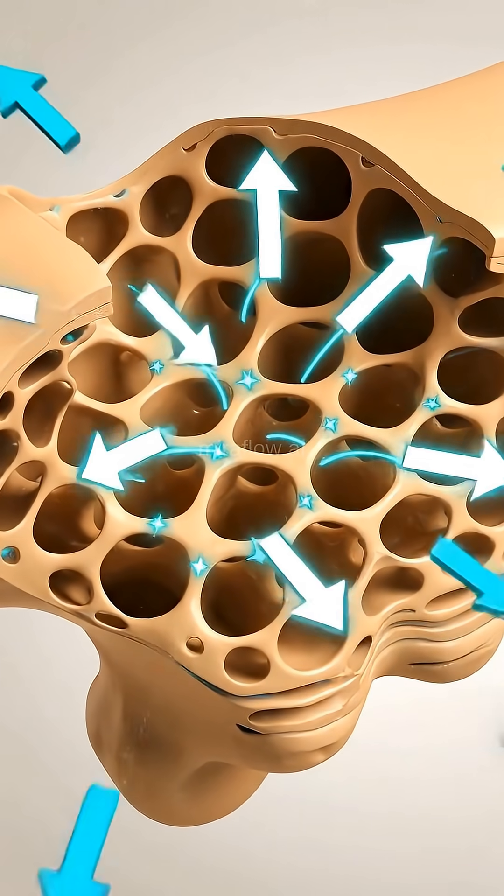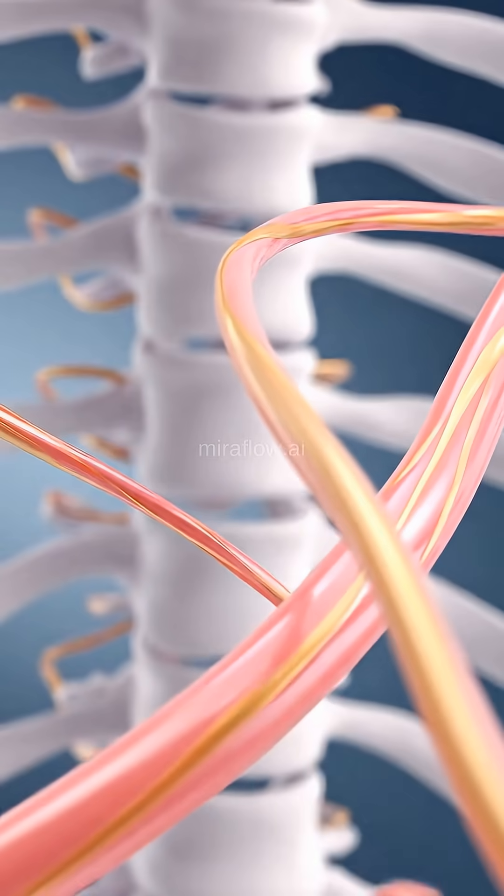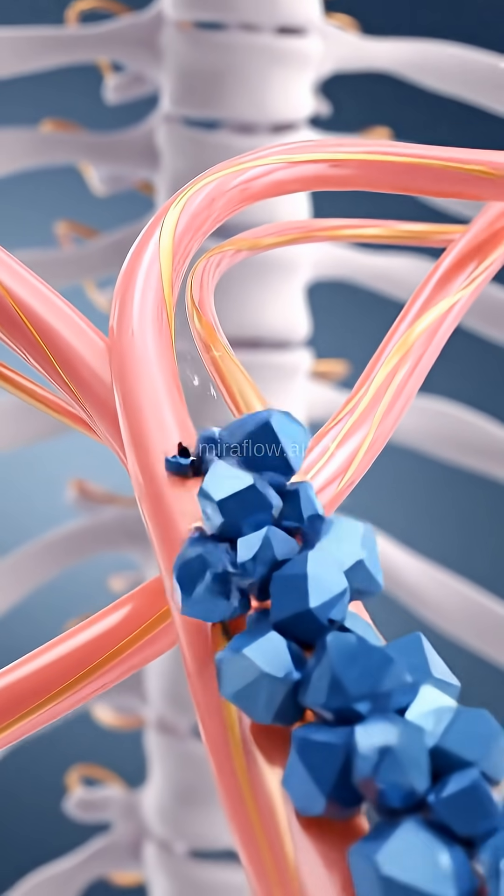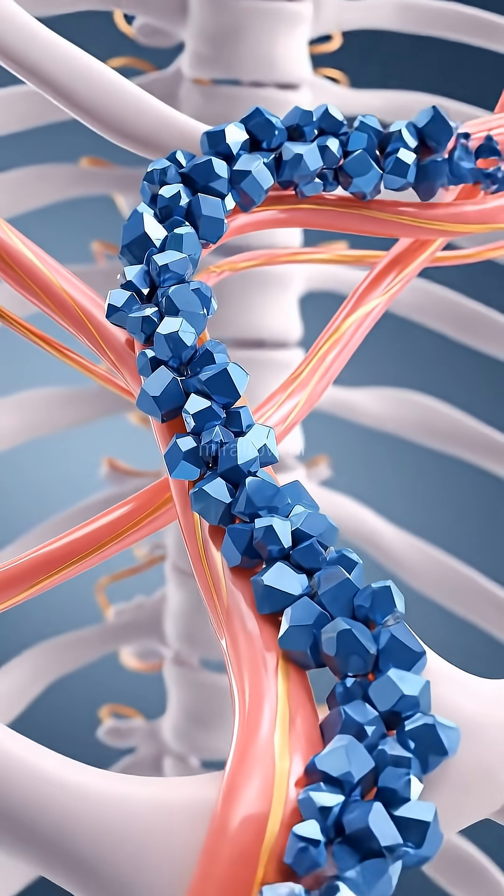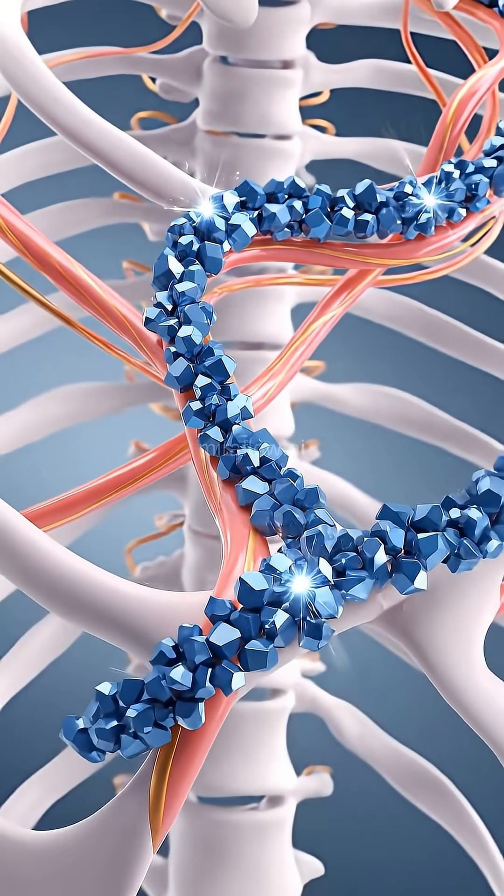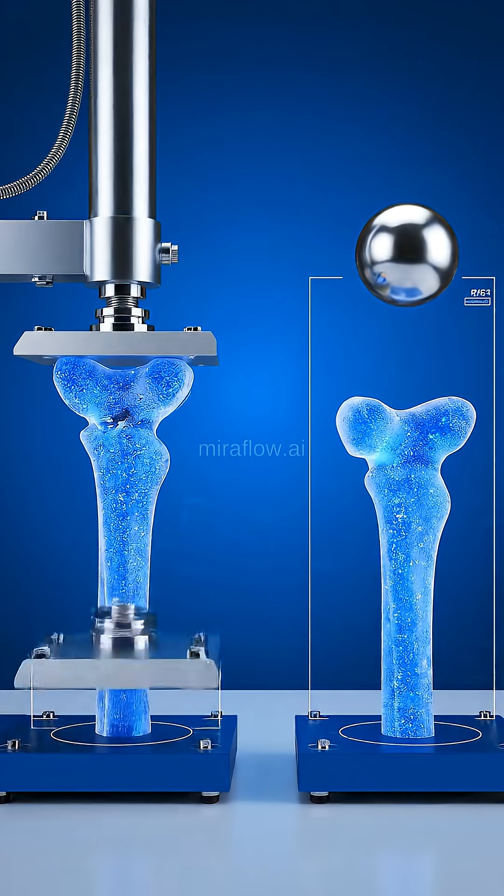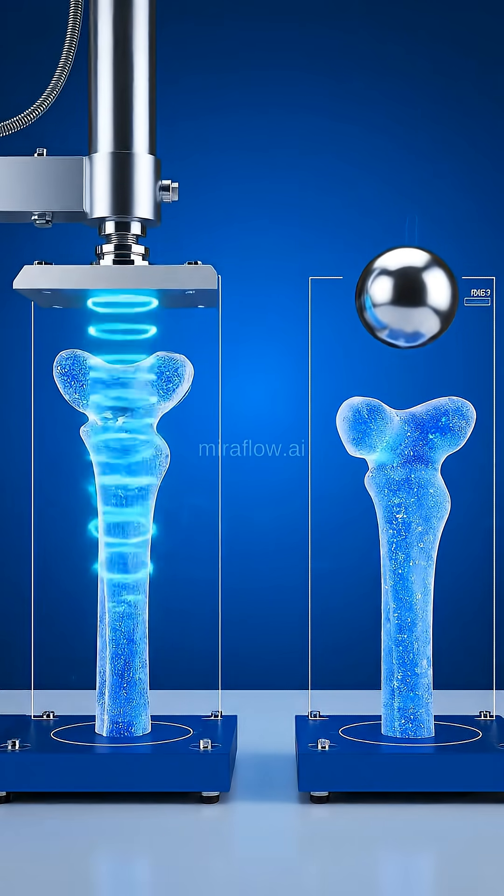Here's how it works. Bone isn't a solid rod, it's more like a smart scaffold. On the outside, you've got a tough shell. On the inside, there's a spongy lattice, think honeycomb or the beams in a bridge, that spreads out force.